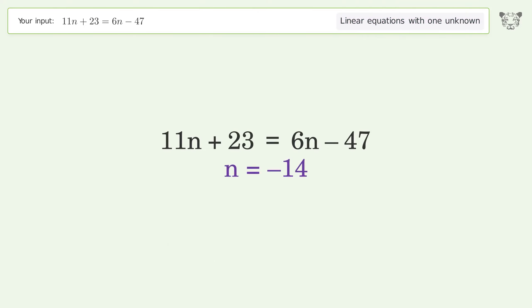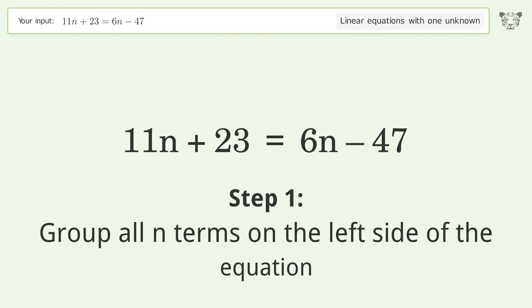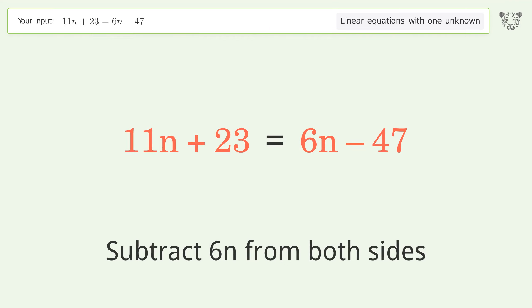You asked Tiger to solve. This deals with linear equations with one unknown. The final result is n equals negative 14. Let's solve it step by step.